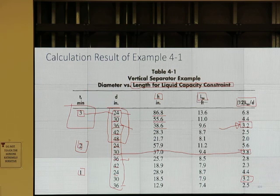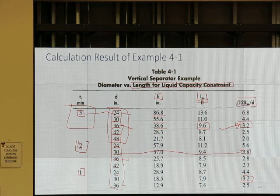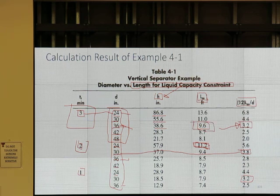The seam-to-seam length I calculated is 9.6 feet, but I can't buy 9.6 feet — that's why I buy the 10-foot size. This kind of calculation not only tells you the size, it also tells you how much liquid to put in to get three minutes retention time and what the seam-to-seam length should be. The actual seam-to-seam length has to be a little larger if the exact size is not commercially available.